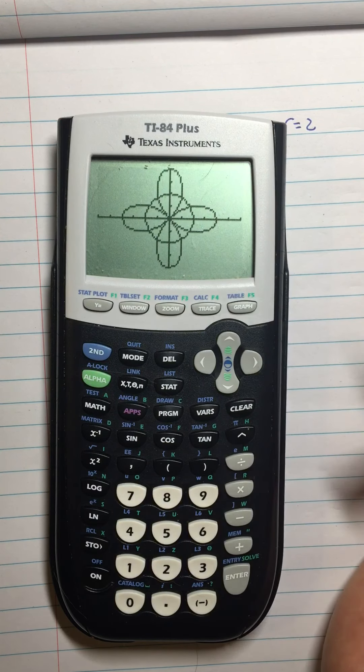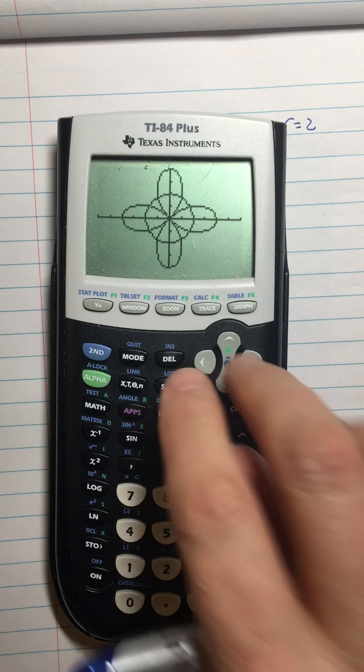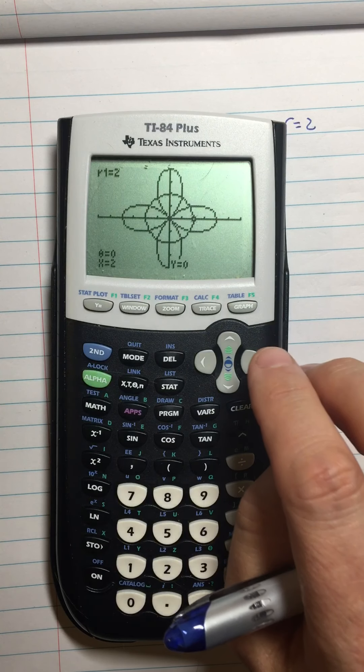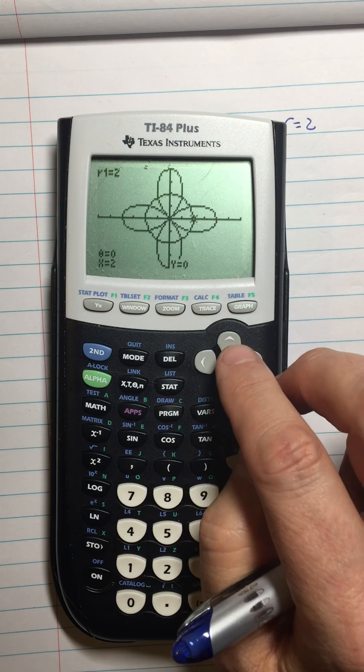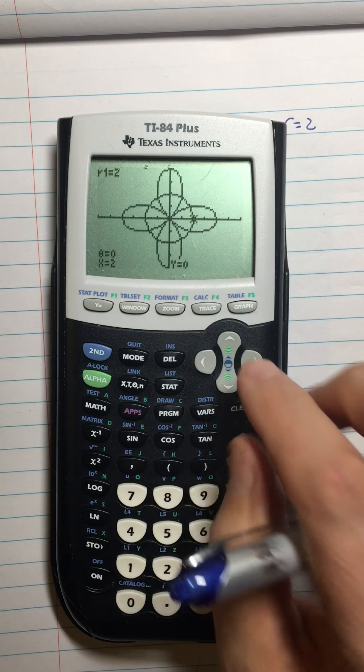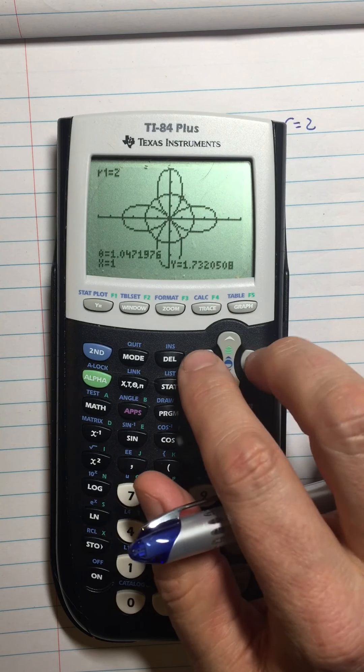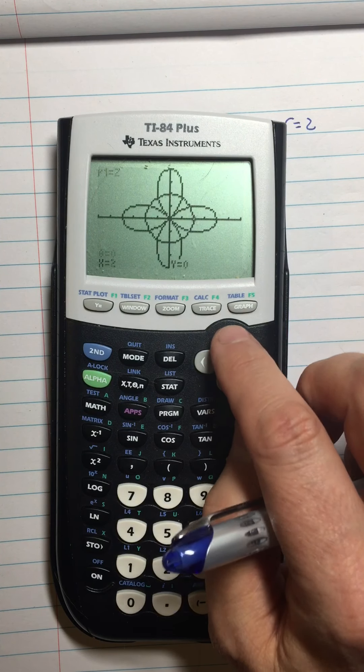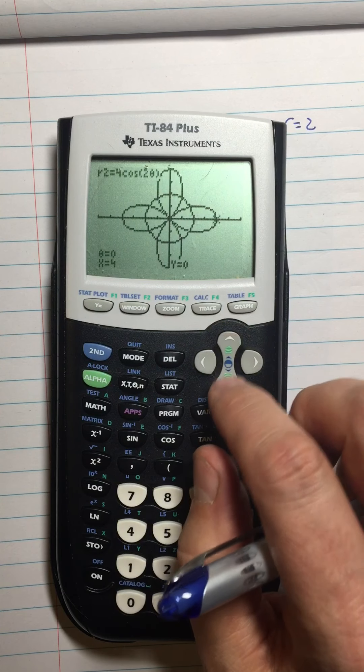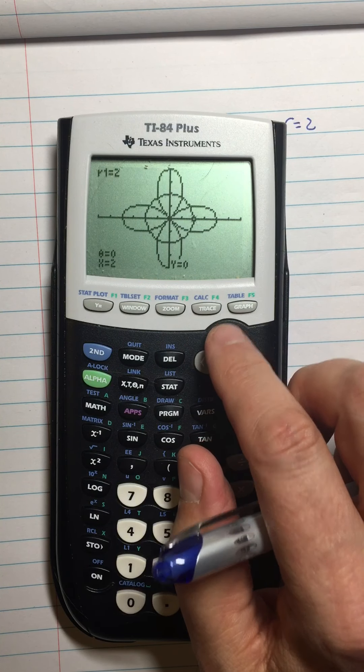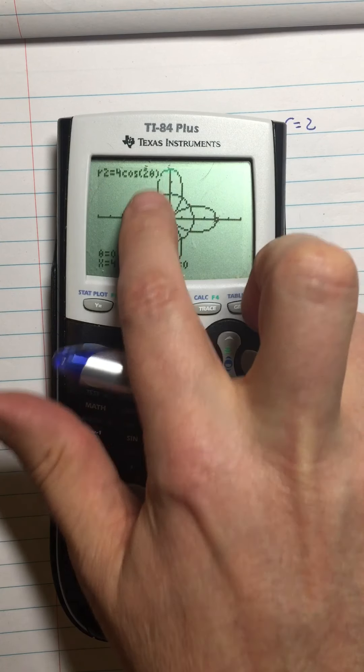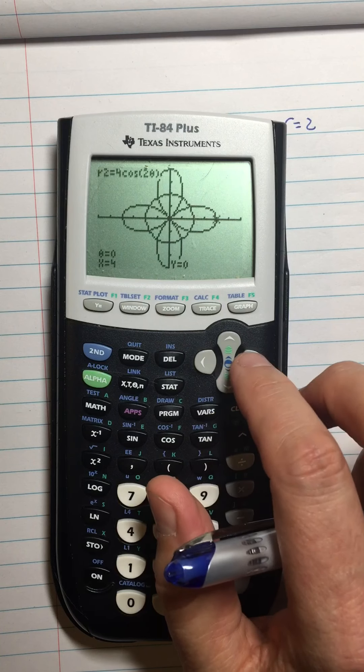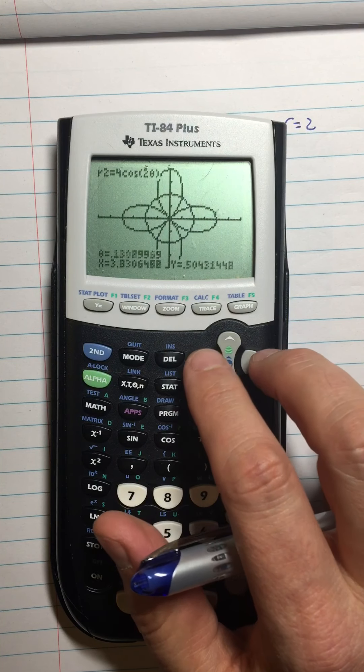What I did was I went to trace mode. It tells you theta and x and y, pretty useful. Here's another thing you might not know about trace mode: there are two functions on here. If you use the up and down arrows, they switch you between functions. Left and right arrows move you along the function.